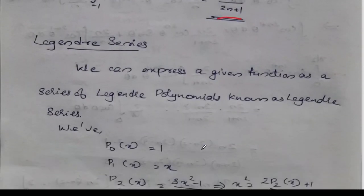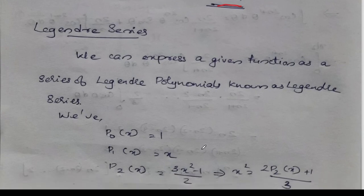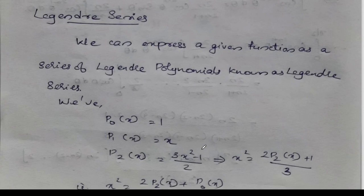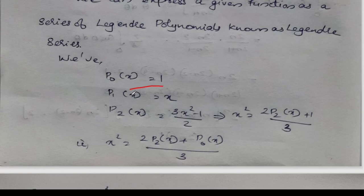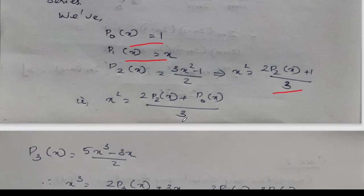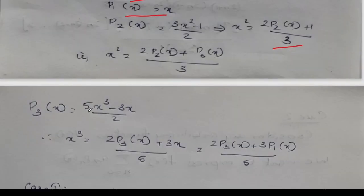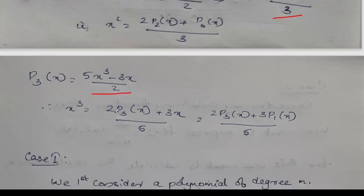Now as a property, the orthogonal property is proved. We can express a given function as a series of Legendre polynomials, which is known as the Legendre series. The function is represented as a series of Legendre polynomials. For example, x squared is expressed in terms of P0 of x and P2 of x, and x cubed is expressed as 2 P3 of x plus 3 P1 of x divided by 5.